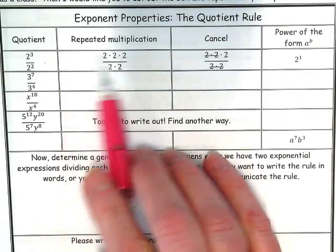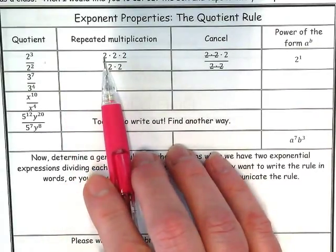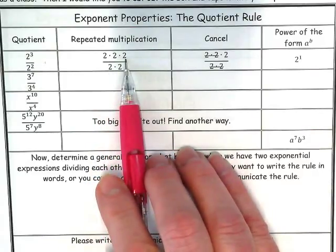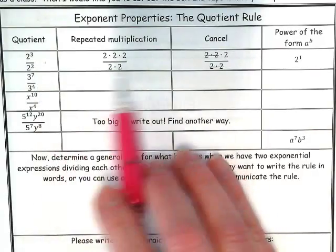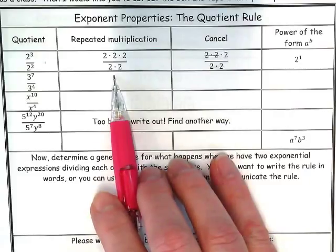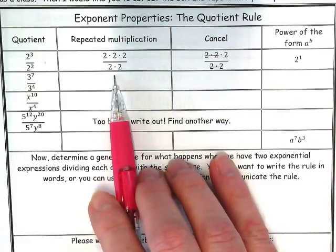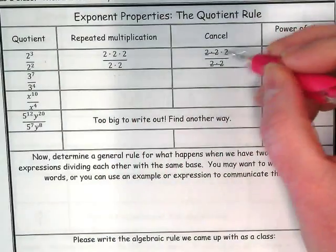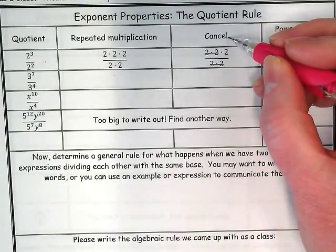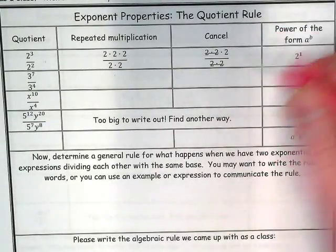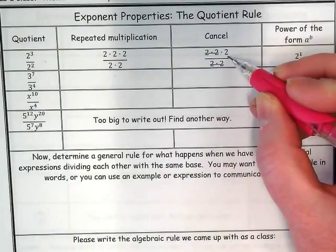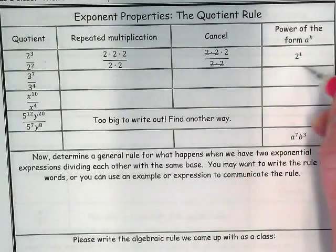The top one is written out as 2 to the third power, and it just does 2 times 2 times 2 for the numerator. The denominator is 2 squared, and how many are down here? Just the two. Notice what happens - we cancel out the ones that are in common. What did that leave us with? Just this one 2, and so it becomes 2 to the first power.